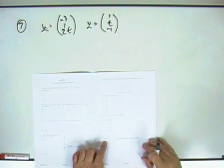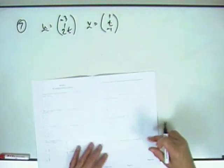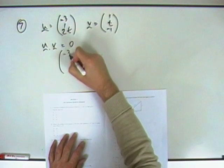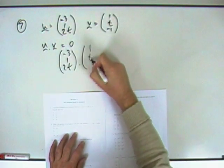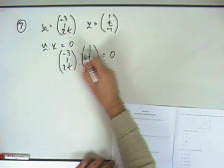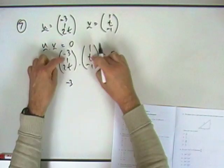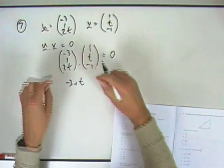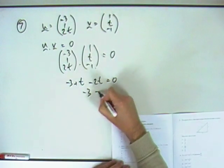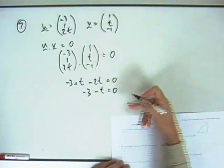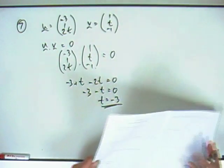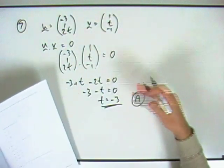Number 7. If u equals this and v equals that, and they're perpendicular, oh well that means that u dot v must equal 0. So that means that negative 3, 1, 2t dot 1, t, negative 1 equals 0. Multiplying out the corresponding components. Negative 3 times 1, negative 3. 1 times t, t. Negative 1 times 2t, negative 2t should equal 0. So that says negative 3 minus t is 0. Type that over, read it backwards. t equals negative 3. Answer A.